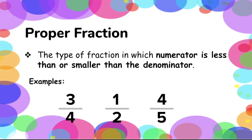Proper fractions are fractions in which the numerator is smaller than the denominator. For example: 3 fourths, 1 half, and 4 over 5. As we can see, the value of our numerators were all smaller compared to the value of all the listed denominators.